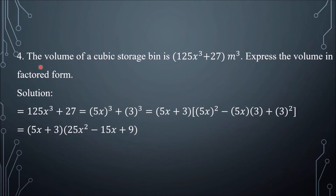Number 4: the volume of a cubic storage bin is 125x cubed plus 27 cubic meters. Express the volume in factored form.